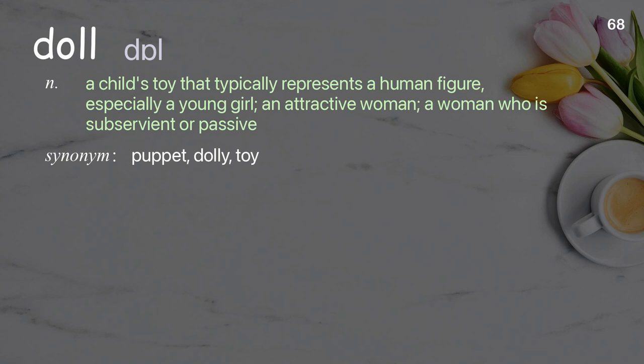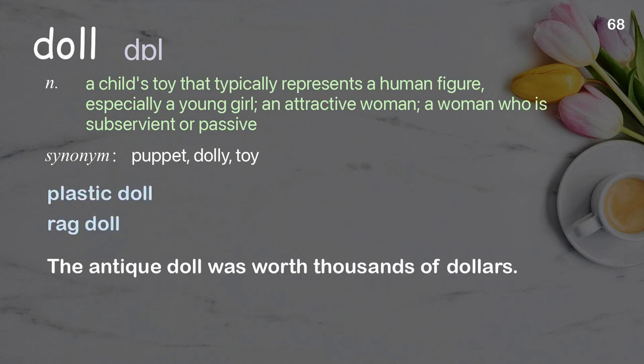Doll: A child's toy that typically represents a human figure, especially a young girl; an attractive woman; a woman who is subservient or passive. Examples: plastic doll, rag doll. The antique doll was worth thousands of dollars.